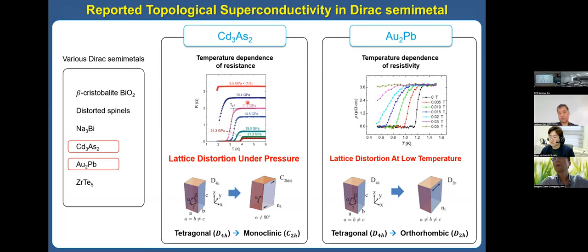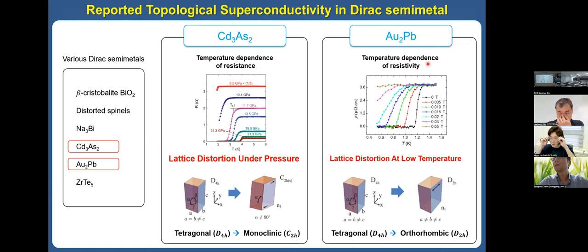The point is that under pressure, there is a crystal structural phase transition from tetragonal to monoclinic. For Au₂Pb, this is the temperature-dependent resistivity. At zero magnetic field, it shows superconductivity near 1.2 K.